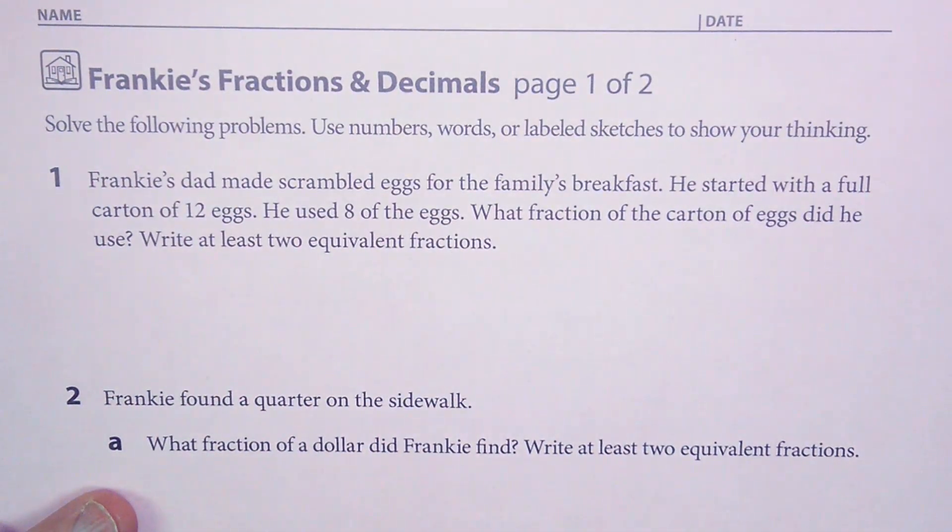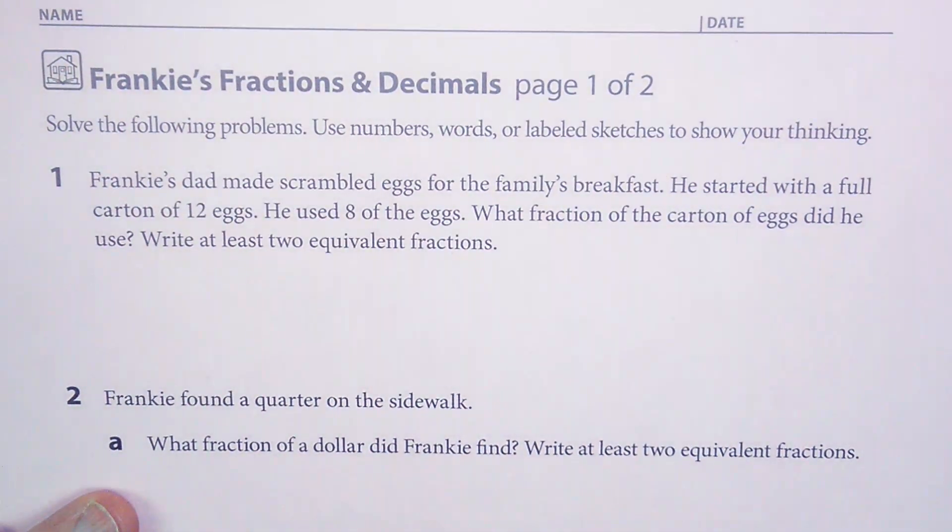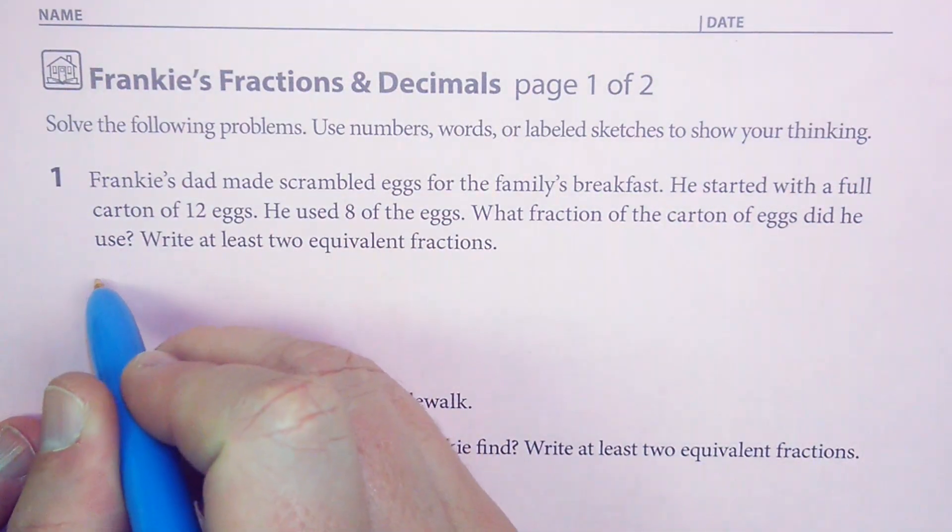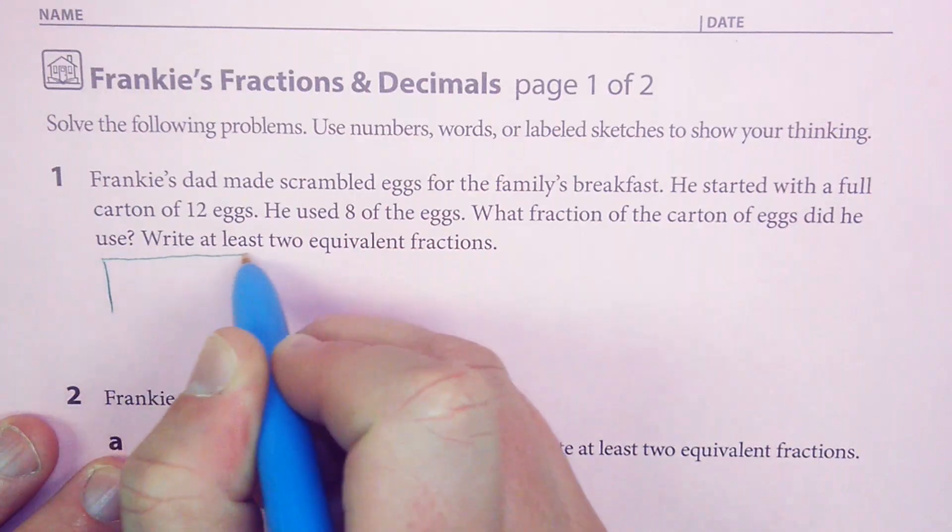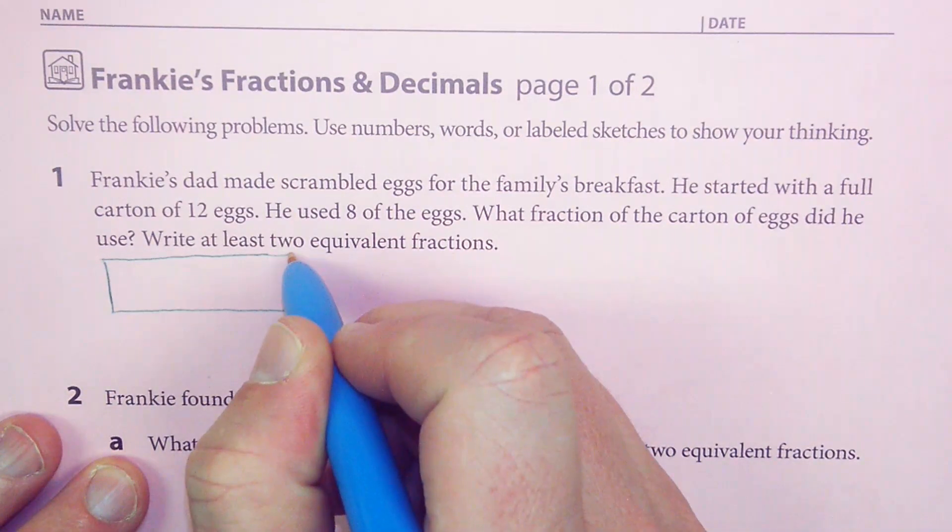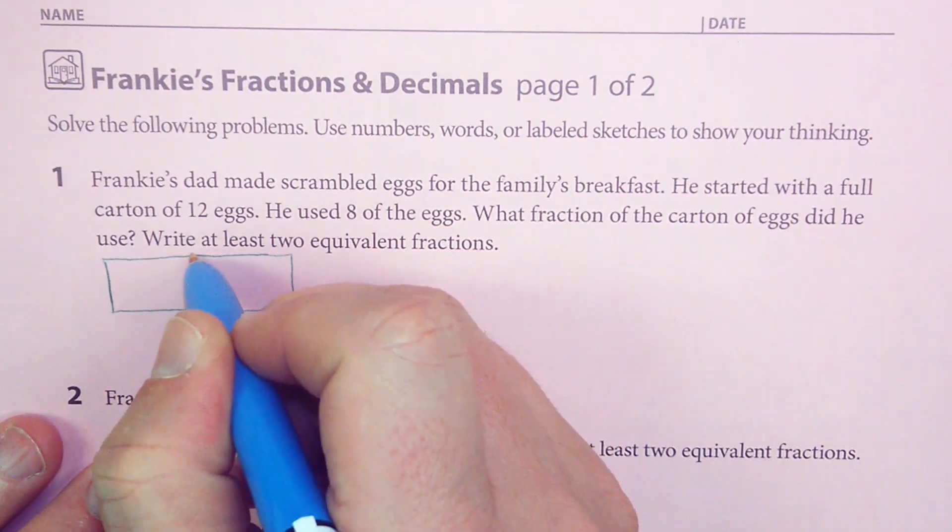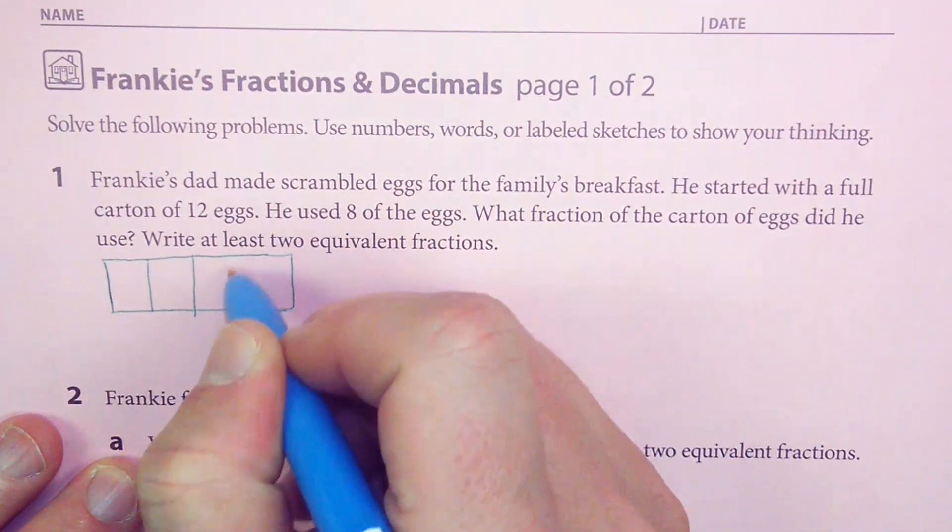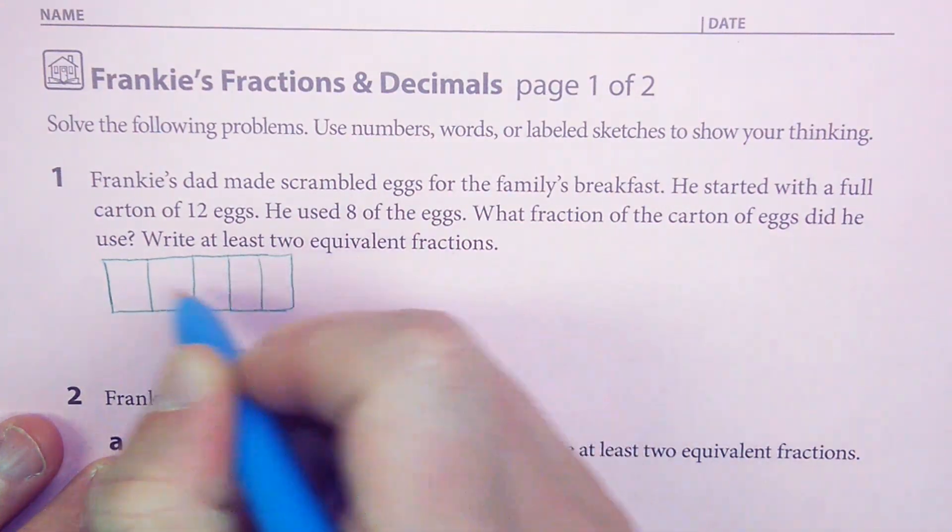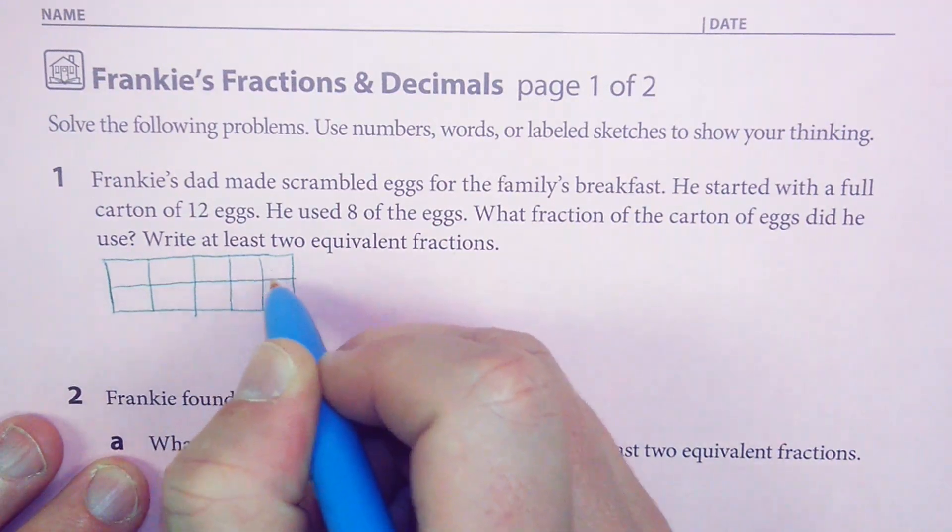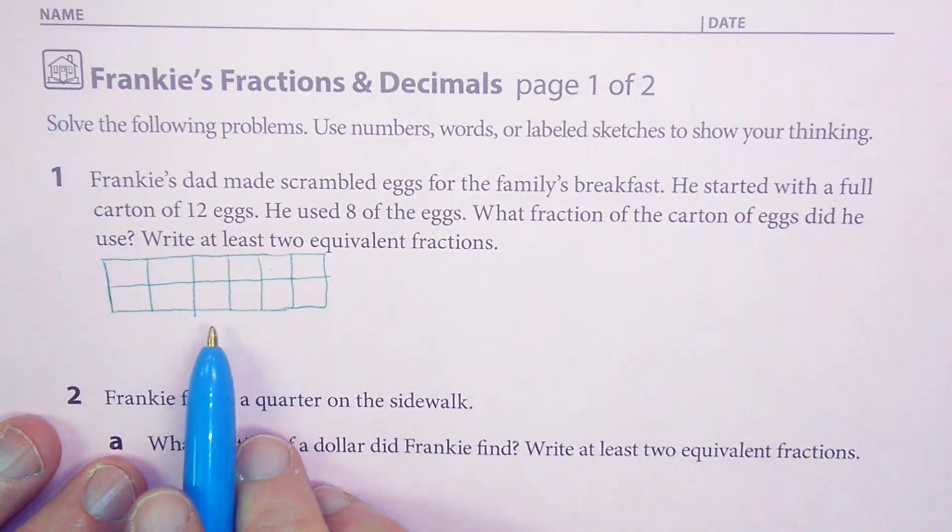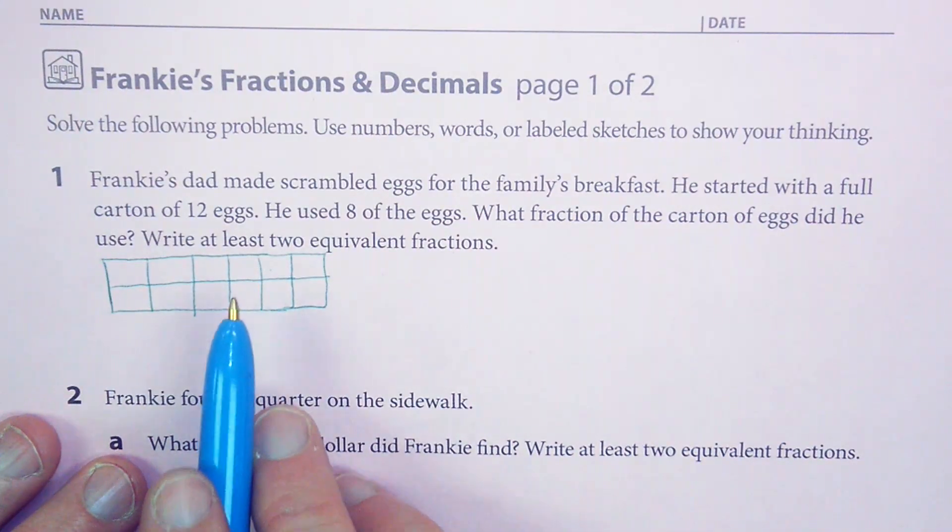The first one says Frankie's dad made scrambled eggs for the family's breakfast. He started with a full carton of 12 eggs. And I think you know by now, if you've watched any of these videos, that I really enjoy drawing these out. Let's see, how many do I have here? Okay, so here's my dozen eggs. That's my egg carton.